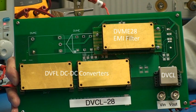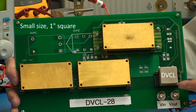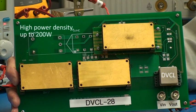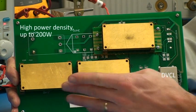The DVCL functions by limiting the rate of rise of its output voltage, and therefore the Inrush Current required to charge the capacitors. As you can see, the DVCL is very small, about one inch square, and it provides extremely high power density, up to 200 watts, enough to power these two DVFL converters.